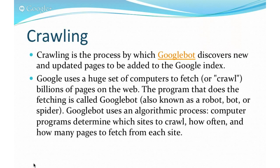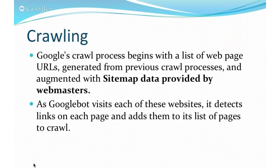Using Webmaster Tools, it's possible to force-feed Google your sitemap. A sitemap is an XML document that lists the pages in your site and can contain categories and keywords. If you are using WordPress, you can install free plugins that will automatically create the sitemap for you.